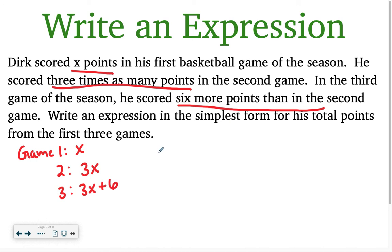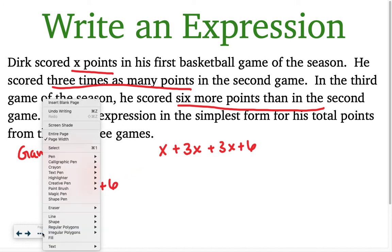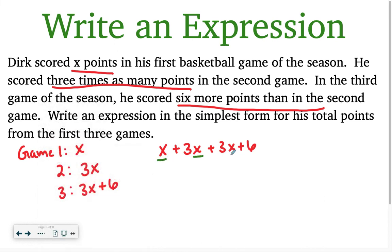Now I have to write an expression in the simplest form for his total points. So total means I have to add up all three games together in order to find his total. Now I need to combine my terms because I have a lot of x terms listed here. So I have an x, I have a 3x, and a 3x. So remember this is a 1, so 1 plus 3 is 4. 4 plus 3 is, I have a total of 7x's plus 6. And that is my expression in simplest form. Because I can't combine a term with an x with a term that doesn't have an x. So that is my final answer.